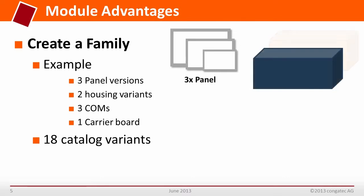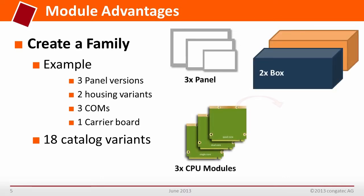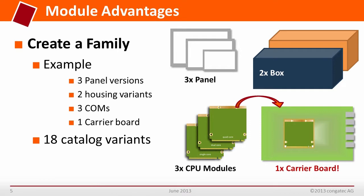Here I show a short example of how you can create a complete product family. Create one carrier board, use multiple CPU modules. Maybe you have two different housings, three different panel sizes, different software versions. Out of this example you can easily create a lot of catalog variants — an entry level model, a mid-range model, and a high-end model. Then you have a complete product family, which is very good for marketing purposes.